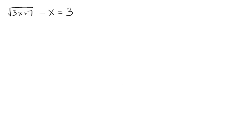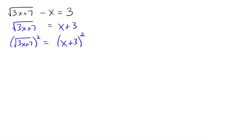Isolate a radical. You only got one there, so square root of 3x plus 7. Add x to both sides, and you get x plus 3. Now square both sides. When you square the left side, the square undoes the square root, and you're just left with 3x plus 7. But when you square the right side, you are not left with x squared plus 9.